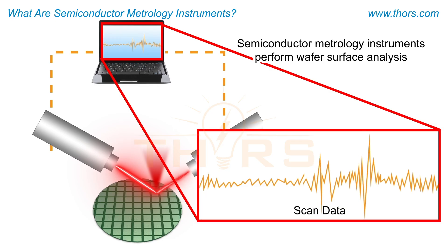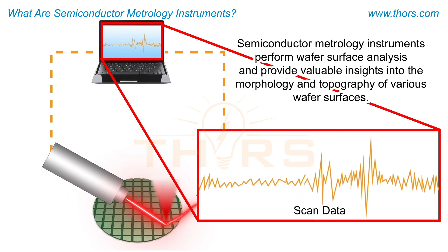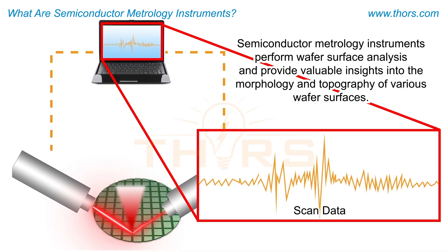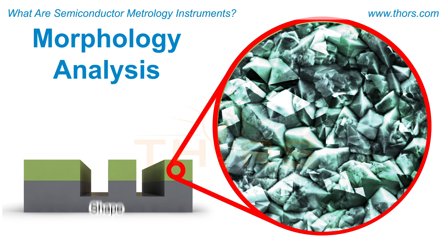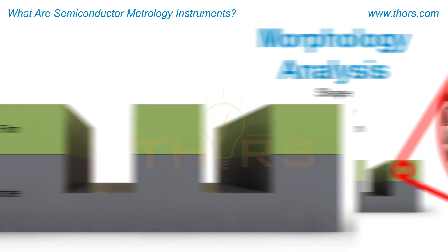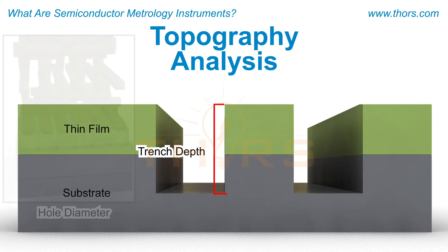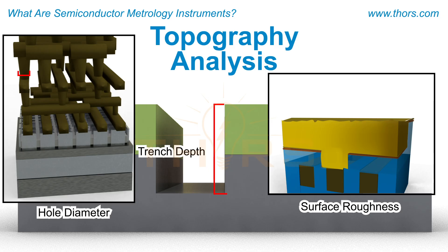Semiconductor metrology instruments perform wafer surface analysis and provide valuable insights into the morphology and topography of various wafer surfaces. Morphology analysis involves a detailed examination of the shape, texture, and distribution of a deposited material on a wafer. Topography analysis focuses on the critical dimensional measurements of features such as trench depths and hole diameters, and the surface roughness parameters of wafer surfaces.